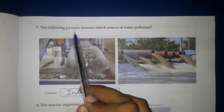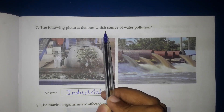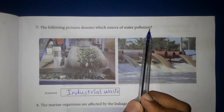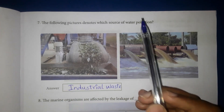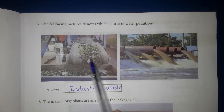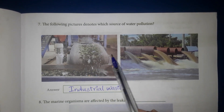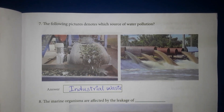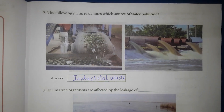Seventh question: The following pictures denote which source of water pollution. Answer: Industrial waste. This is industrial waste.